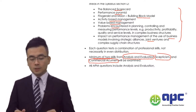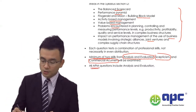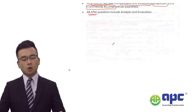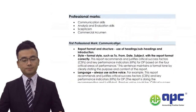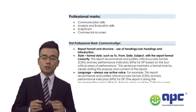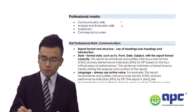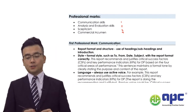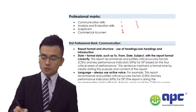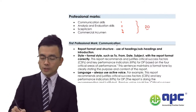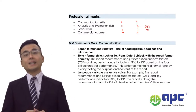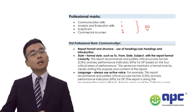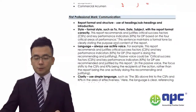All questions will test the analysis evaluation skill. There are four professional skills in total, and these marks add up to 20 in the entire APM paper. Let's talk about the communication skill first.